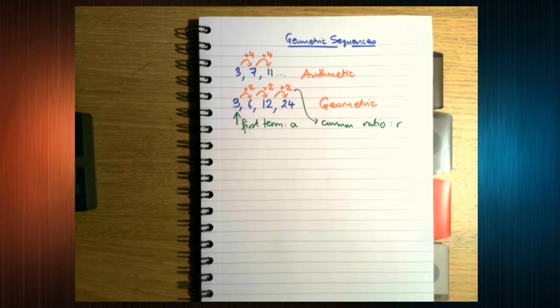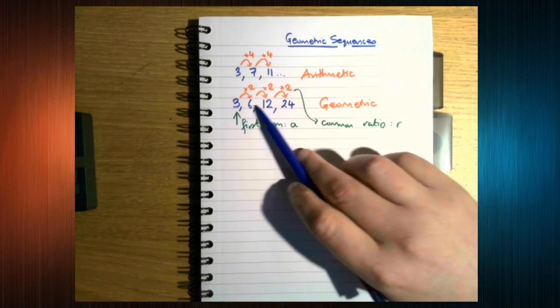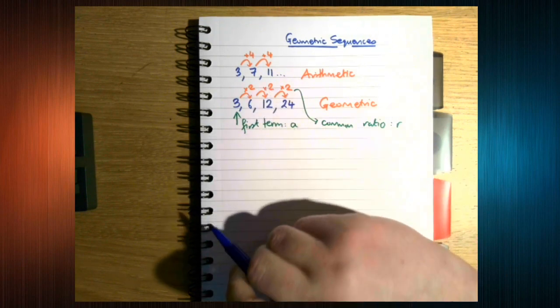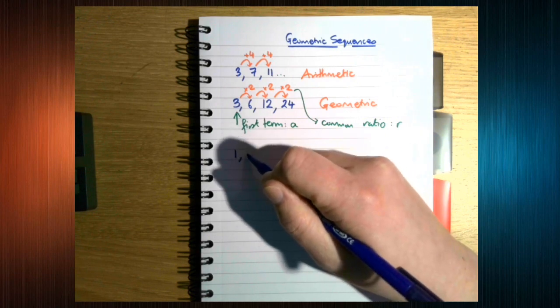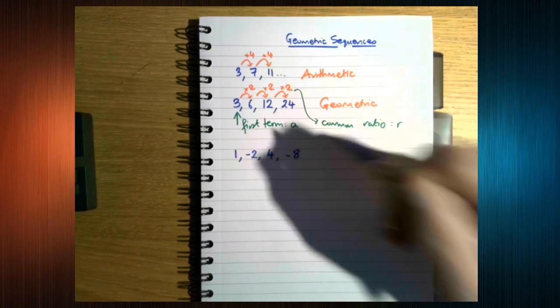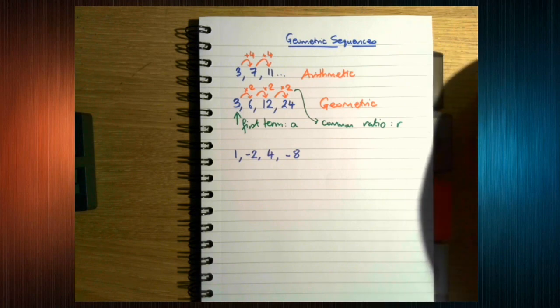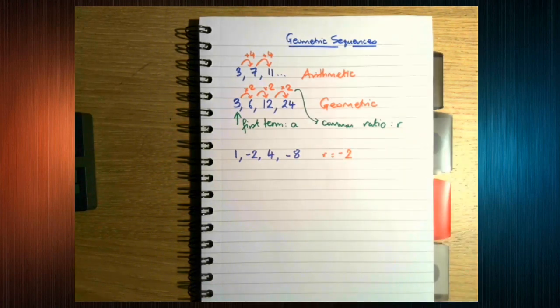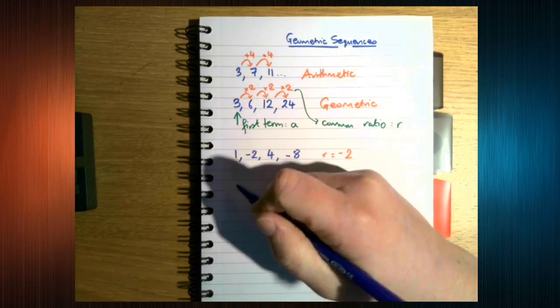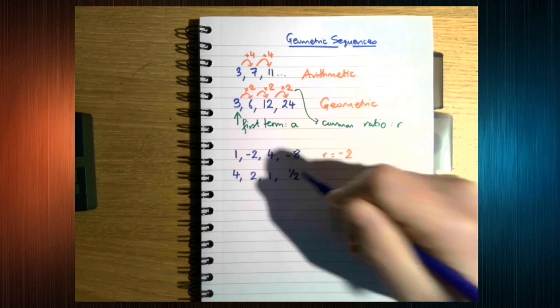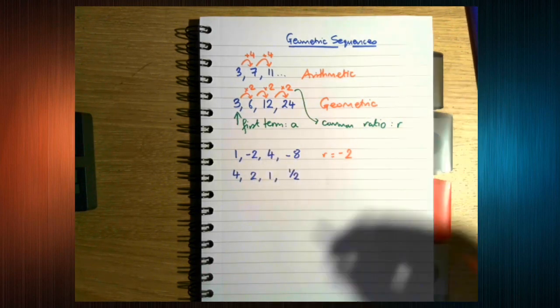Now a common ratio doesn't have to be an integer. Doesn't have to be positive. This is a geometric sequence. Our common ratio is 2. This is another geometric sequence. Our common ratio here is minus 2. This is another. The common ratio here is a half.